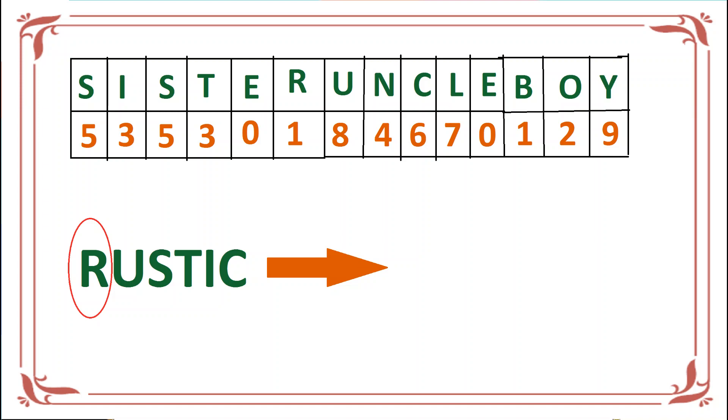Now using this table of alphabets denoting numerical values, I will use this to code the word RUSTIC. R uses 1, U uses 8, S uses 5, T uses 3, I uses 3, and C uses 6.